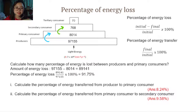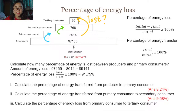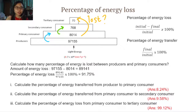Let's look at the third question: calculate the percentage of energy lost from primary consumer to tertiary consumer. The final answer is 99.12%. If you have any trouble with the calculations, please feel free to ask in the comments below, message me personally, or we can discuss it during class.